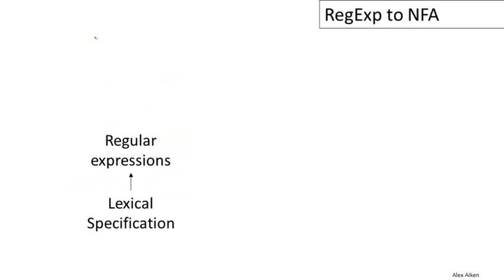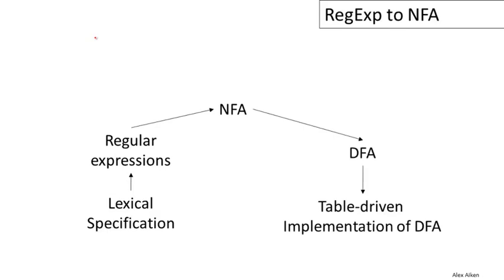We have a lexical specification that we want to implement. The first step is for someone to write that down as a set of regular expressions. That by itself is not implementation — that's just a specification. So we have to translate that into a program that can actually do lexical analysis, and this happens in several steps. The first part is to translate those regular expressions into non-deterministic finite automata that recognize exactly the same thing. And then those non-deterministic automata are translated into deterministic automata. And finally, those deterministic automata are implemented as a set of lookup tables and a little bit of code for traversing those tables.